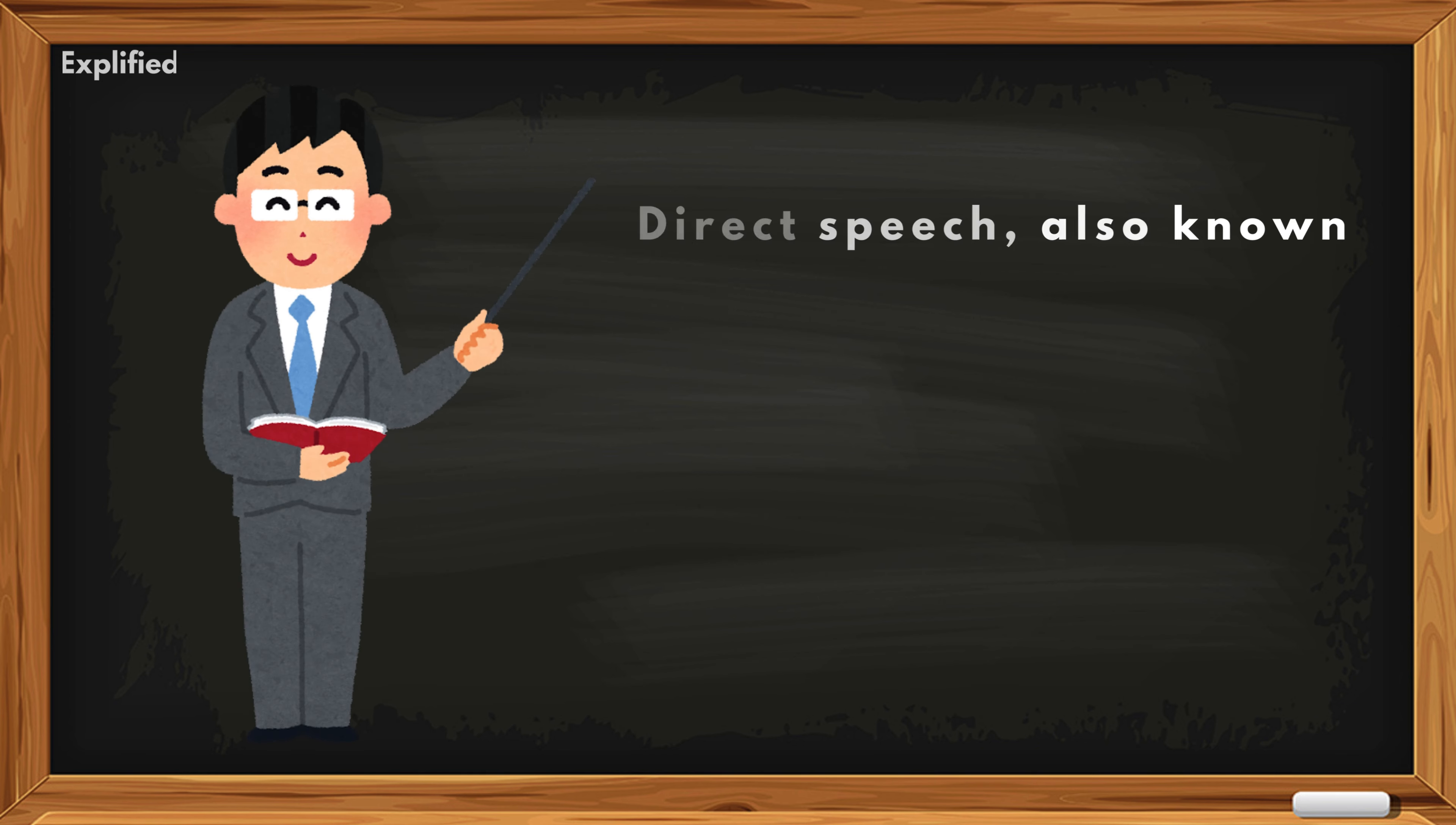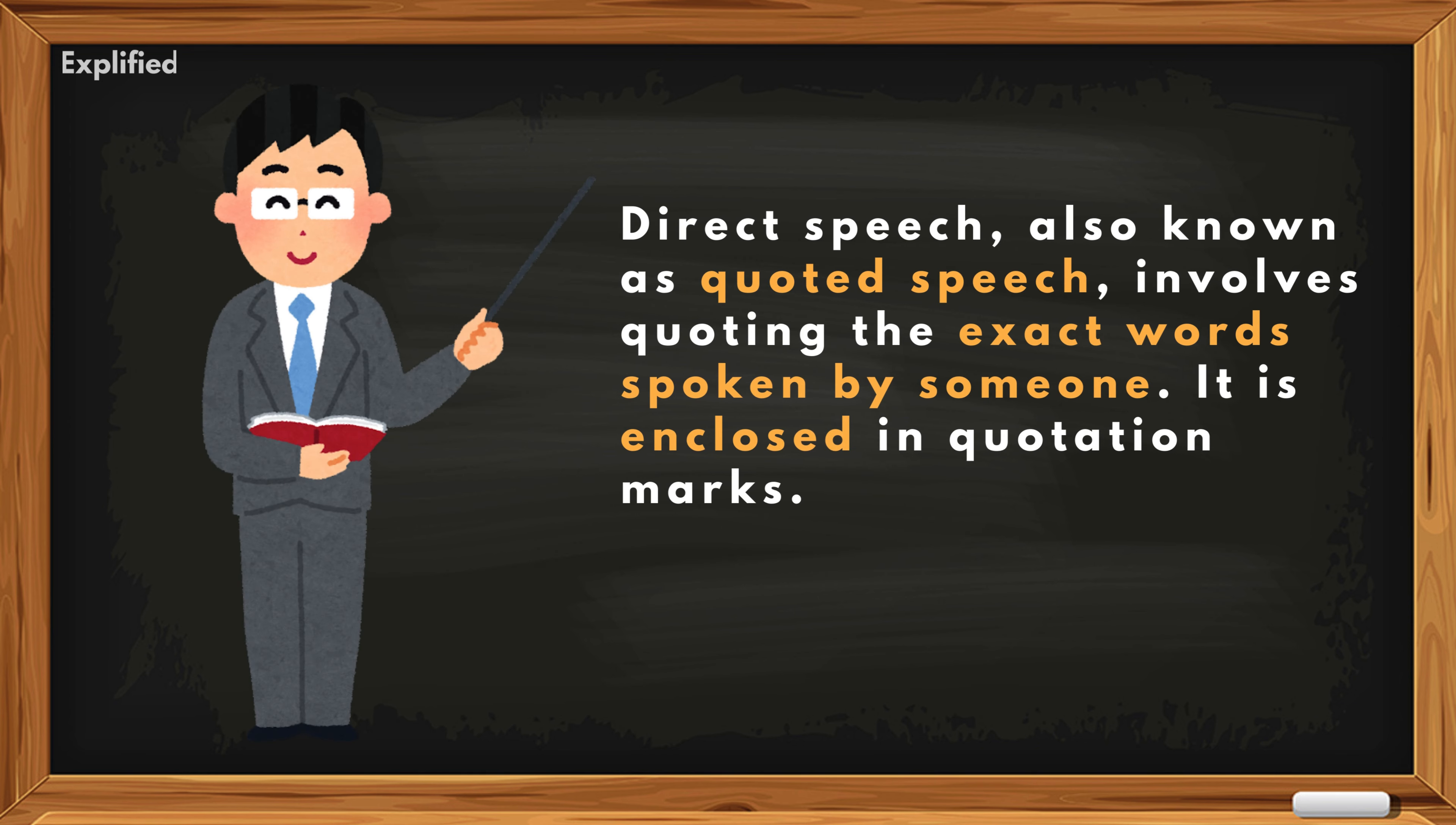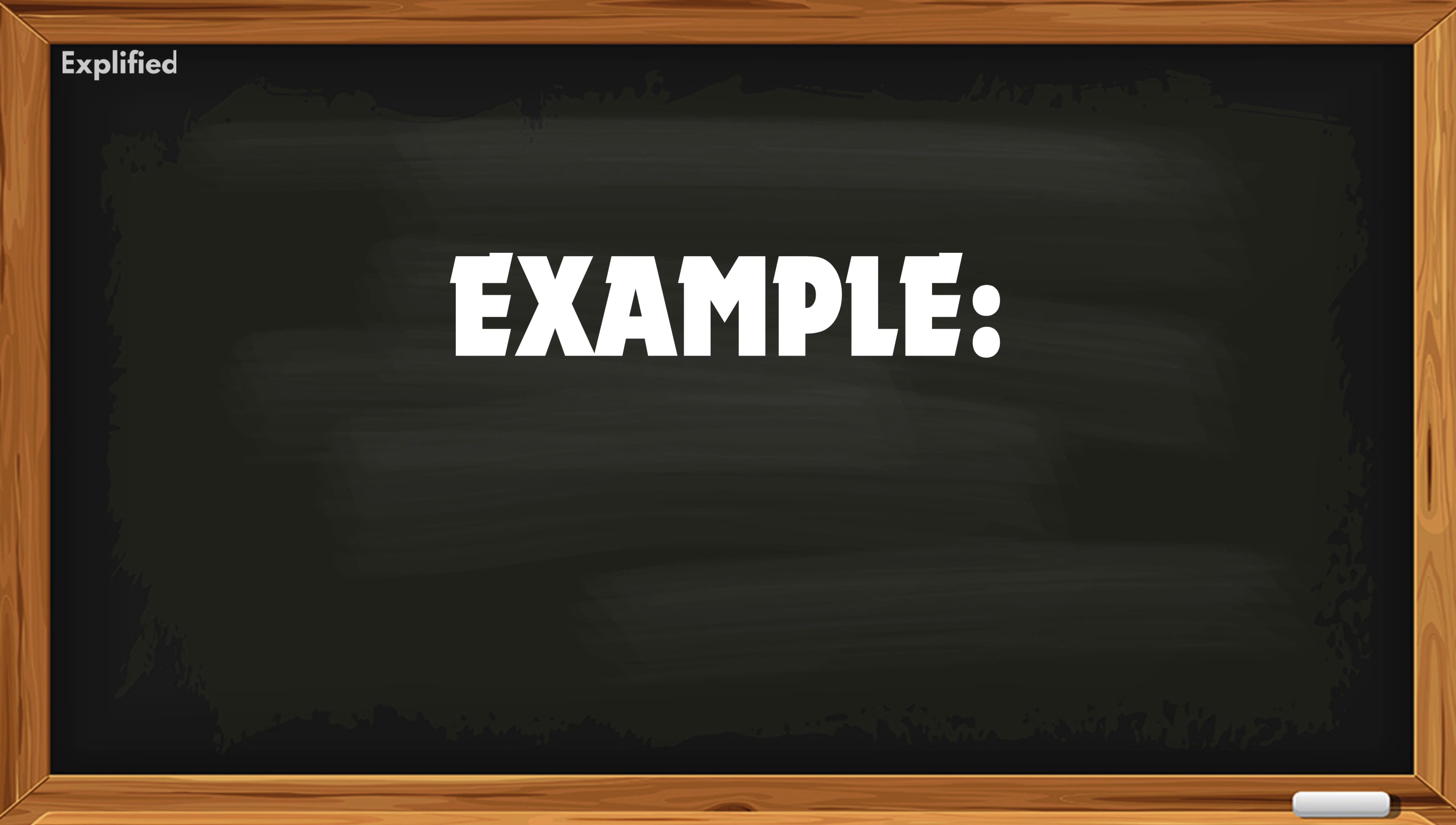What is direct speech? Direct speech, also known as quoted speech, involves quoting the exact words spoken by someone. It is enclosed in quotation marks. Example: John said, I am going to the store.